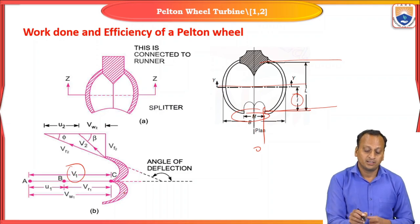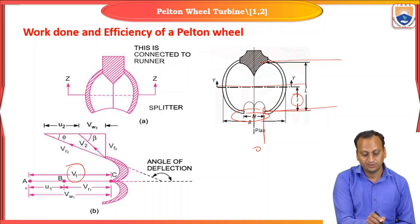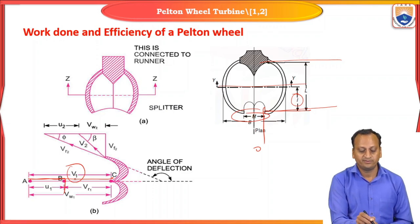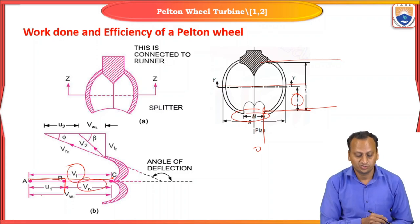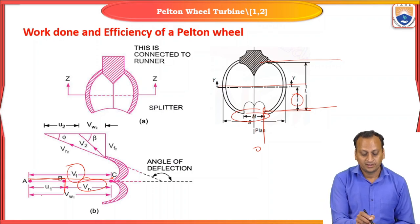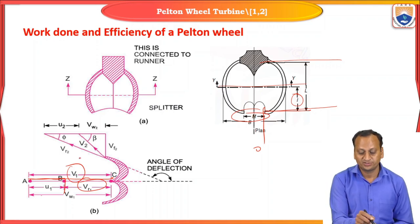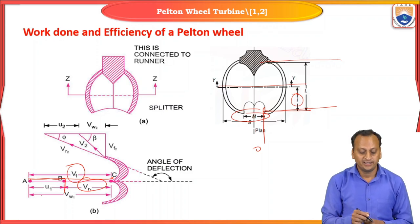There is a blade velocity U1 acting along the direction of motion. The difference between V1 and U1 gives the relative velocity Vr1 with which the jet strikes. From the inlet straight-line velocity triangle: AB is U1, AC is V1, and Vr1 = V1 − U1. The inlet velocity triangle is a straight line on which all velocity parameters — V1, U1, Vr1 — are identified.